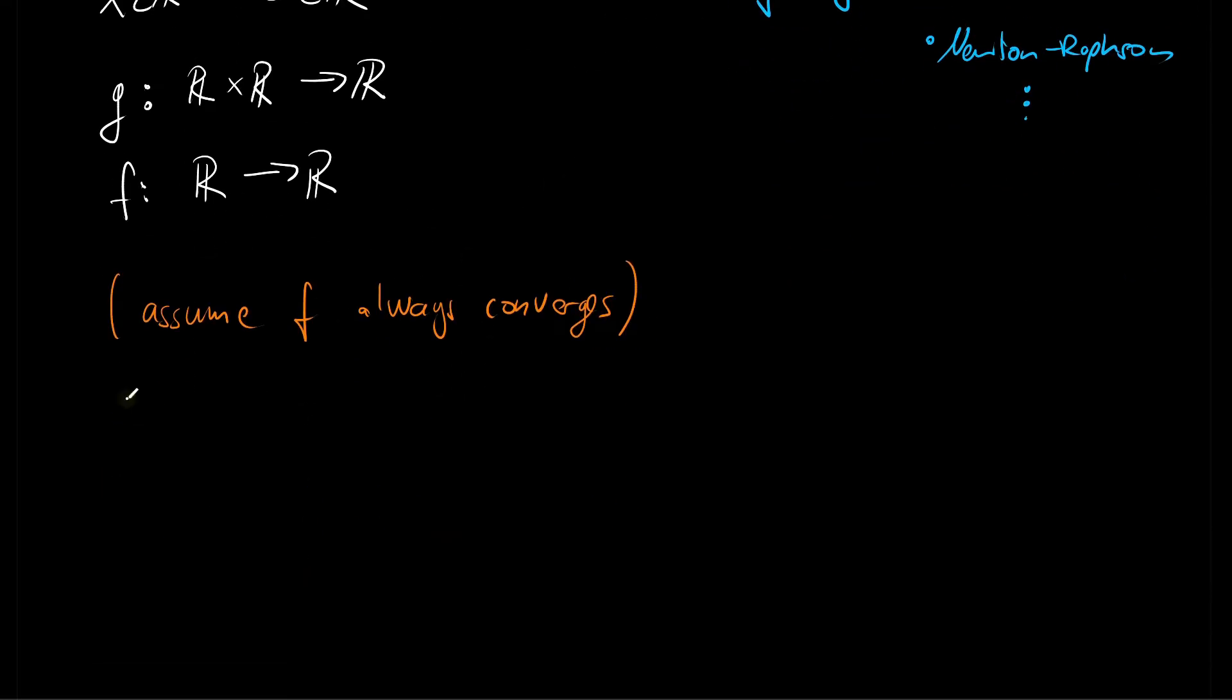So in other words, our task here is that we are to propagate tangent information on the input, so a theta dot, which is another real-valued number, to tangent information on the output, so to x dot, which is another real-valued number.